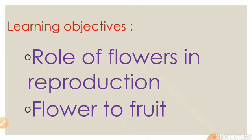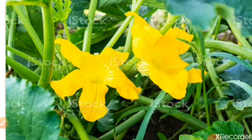Now shall we move on to the role of flowers in reproduction — that means how flowers can change into fruits? To understand how a flower develops into a fruit, let us see an experiment on a pumpkin plant.